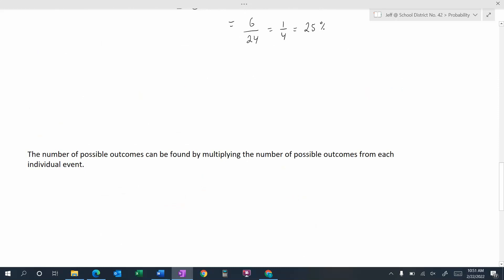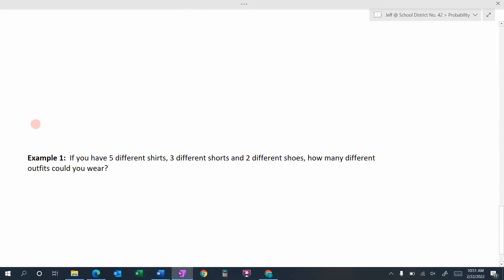So that's all we need to do. Figure out how many outcomes there is in the first event, figure out how many outcomes there is in the second event, multiply them together, and we have the total number of outcomes. So let's look at a couple of examples here.